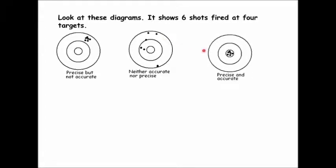Let's look at the third target. These shots are precise and accurate. They're accurate because they hit the bullseye — the accepted value. And they're precise because they're all close together. So for numbers to be both accurate and precise, they would have to be close to each other and close to the accepted value.